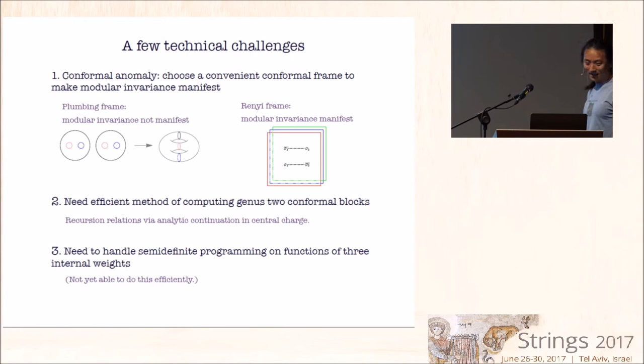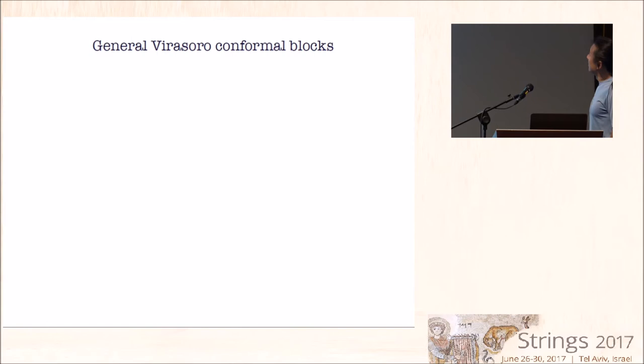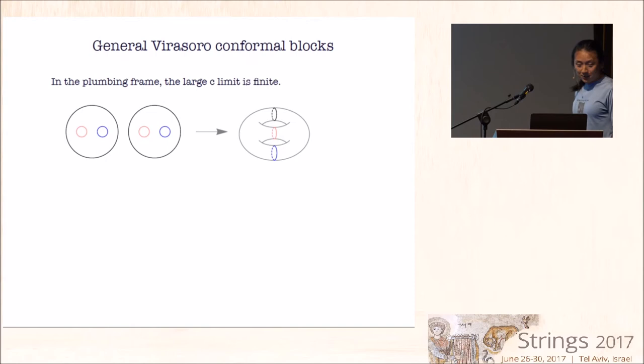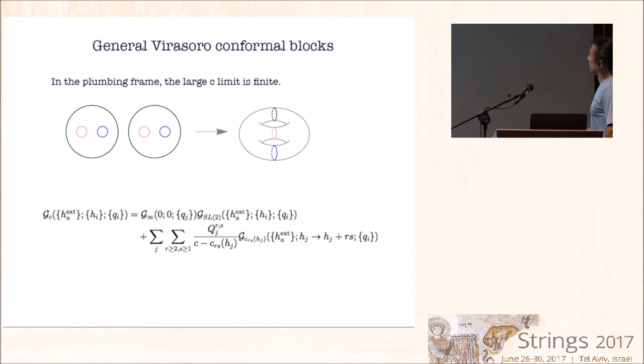Second, we need efficient method of computing genus two conformal blocks. And I'll tell you a little bit about how to do this using a generalization of Zamolodchikov recursion relation. And then we need to handle the semi-definite programming problem in trying to actually implement these genus two modular crossing equations and use it to constrain structure constants. Unfortunately, this we haven't been able to implement very systematically numerically, but I'll tell you some results obtained by some slightly clumsy analysis by hand.